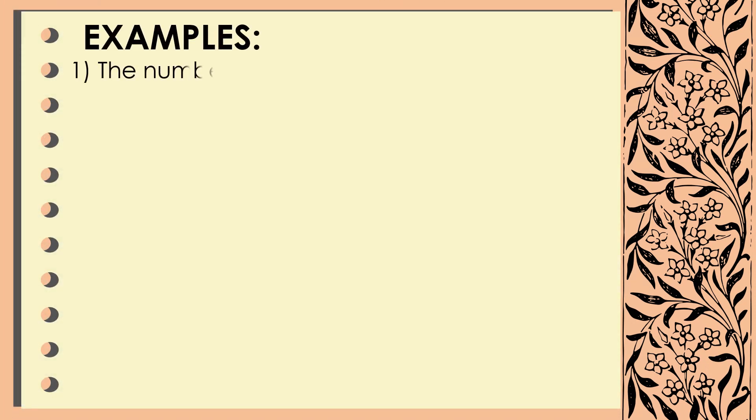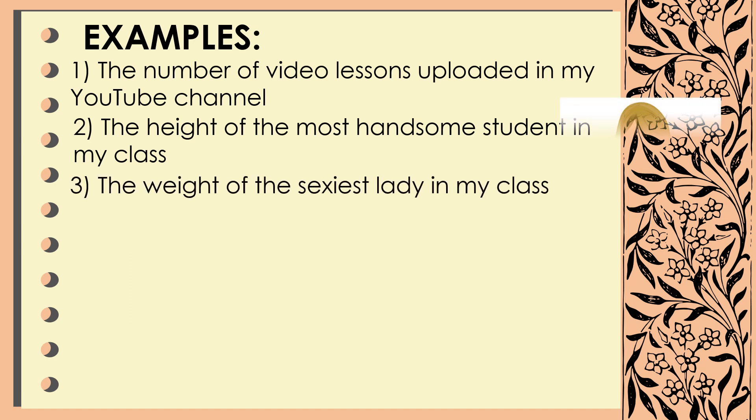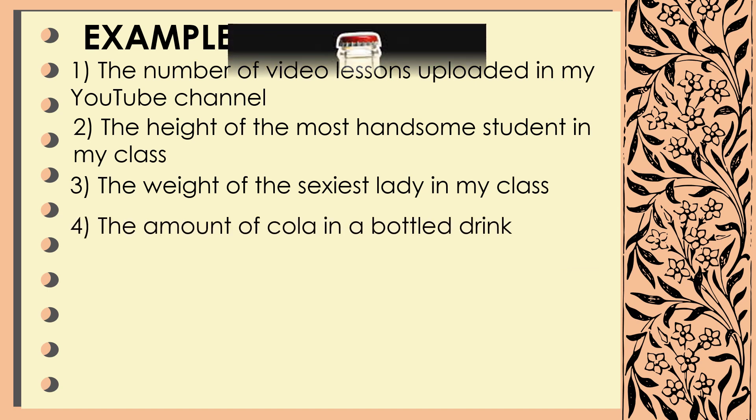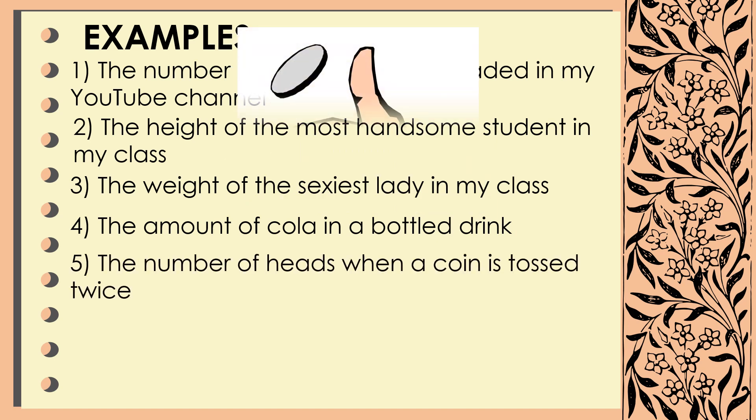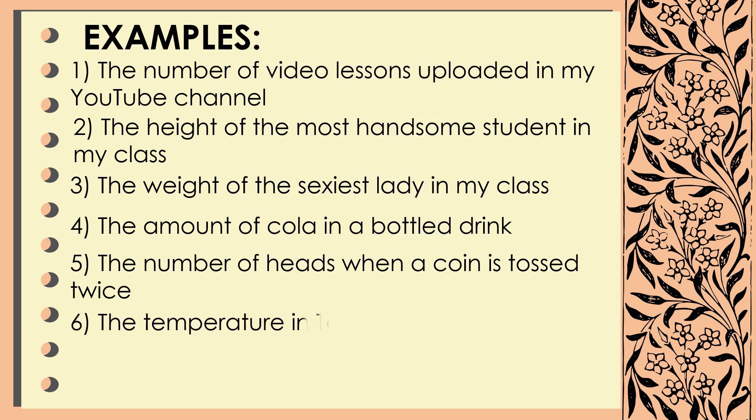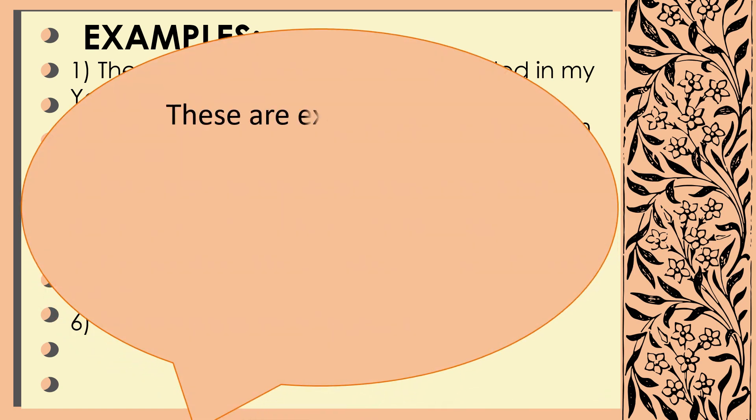For example, number one, the number of video lessons uploaded in my YouTube channel. Number two, the height of the most handsome student in my class. Number three, the weight of the sexiest lady in my class. Number four, the amount of cola in a bottled drink. Number five, the number of heads when a coin is tossed twice. Or number six, the temperature in Tagaytay. These are examples of a random variable.